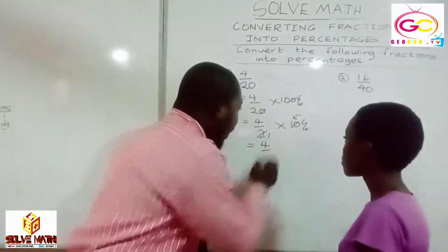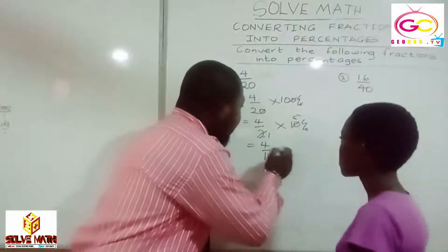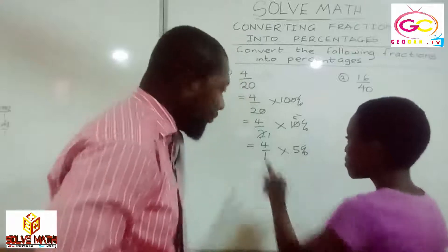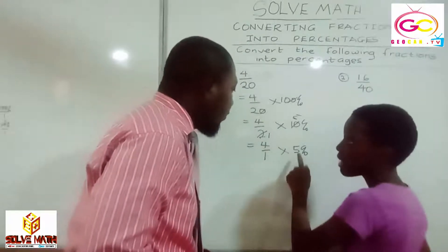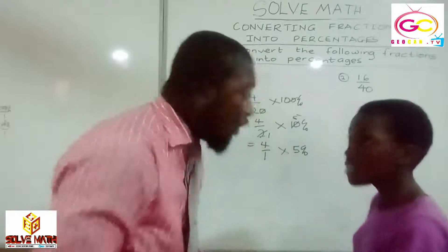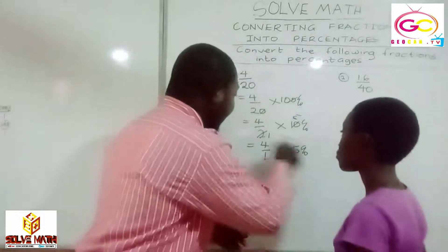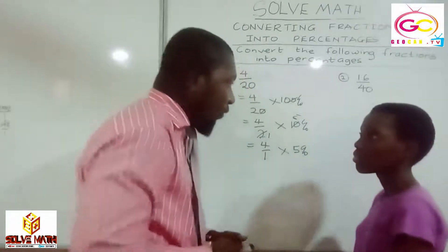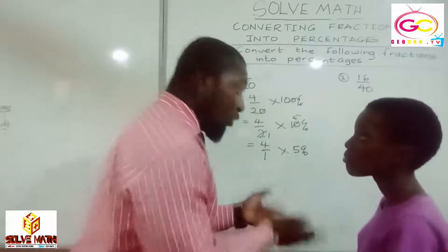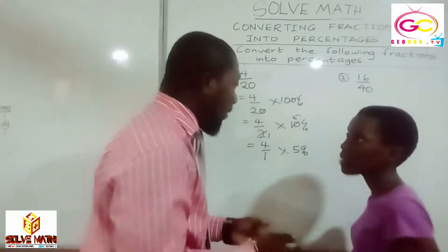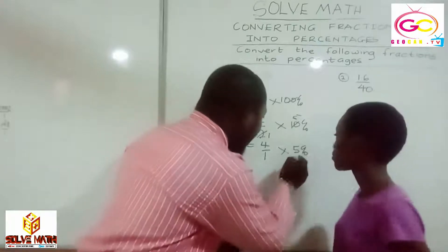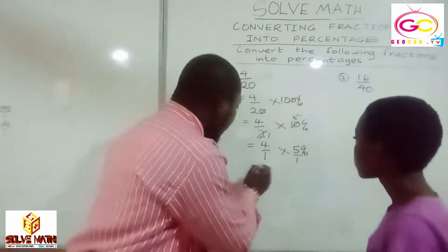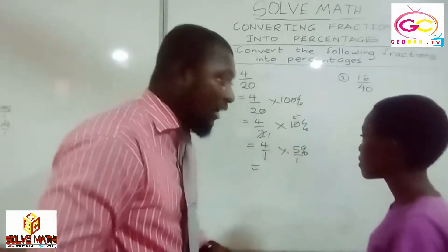So we have 4 over 1 times 5%. Multiply the 4 by the 5%. Can we cancel again? We can write 5% over 1 — any number over 1 is the same number. So that would be 5 over 1. It means you have to multiply: 4 times 5, what do you get? 20%.